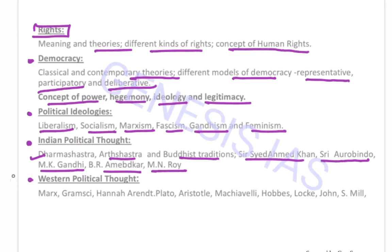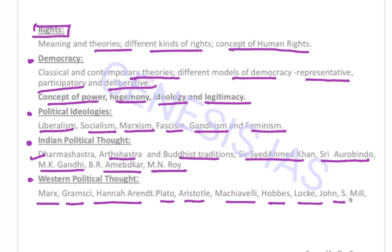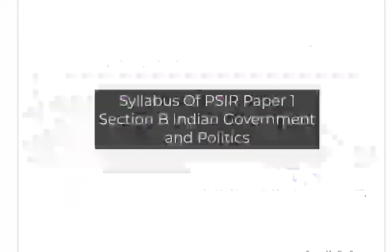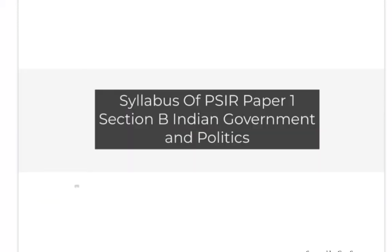Then Western Political Thought. It includes Marx, Gramsci, Hannah Arendt, Plato, Aristotle, Machiavelli, Hobbes, Locke, and J.S. Mill. This concludes the syllabus for PSIR Paper 1 Section A.